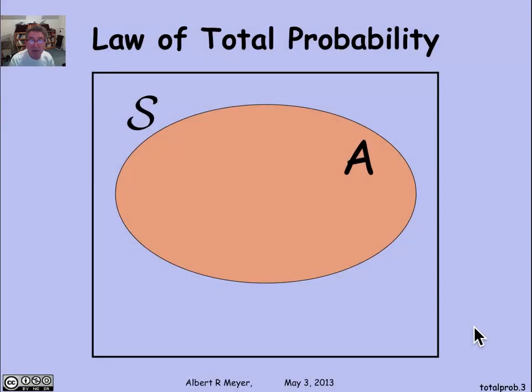Here's the way to understand the law of total probability abstractly. It starts off with set theoretic reasoning. Suppose that I have a set A embedded in some larger sample space S. So A is really an event, but we're just going to think of it as a set.